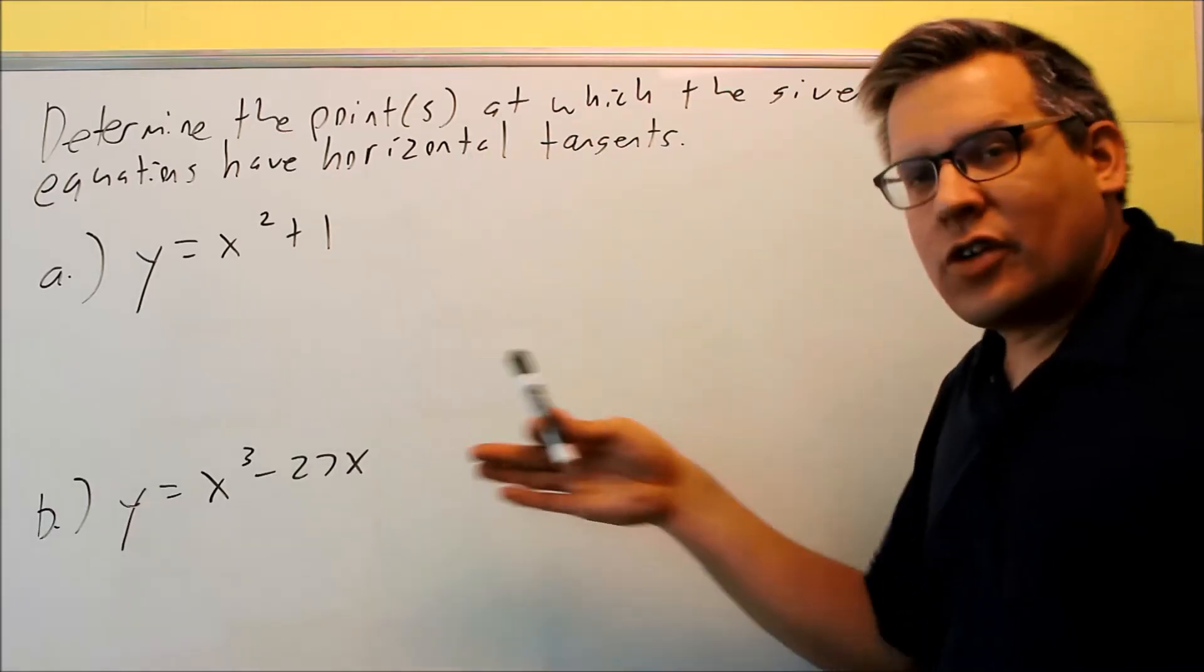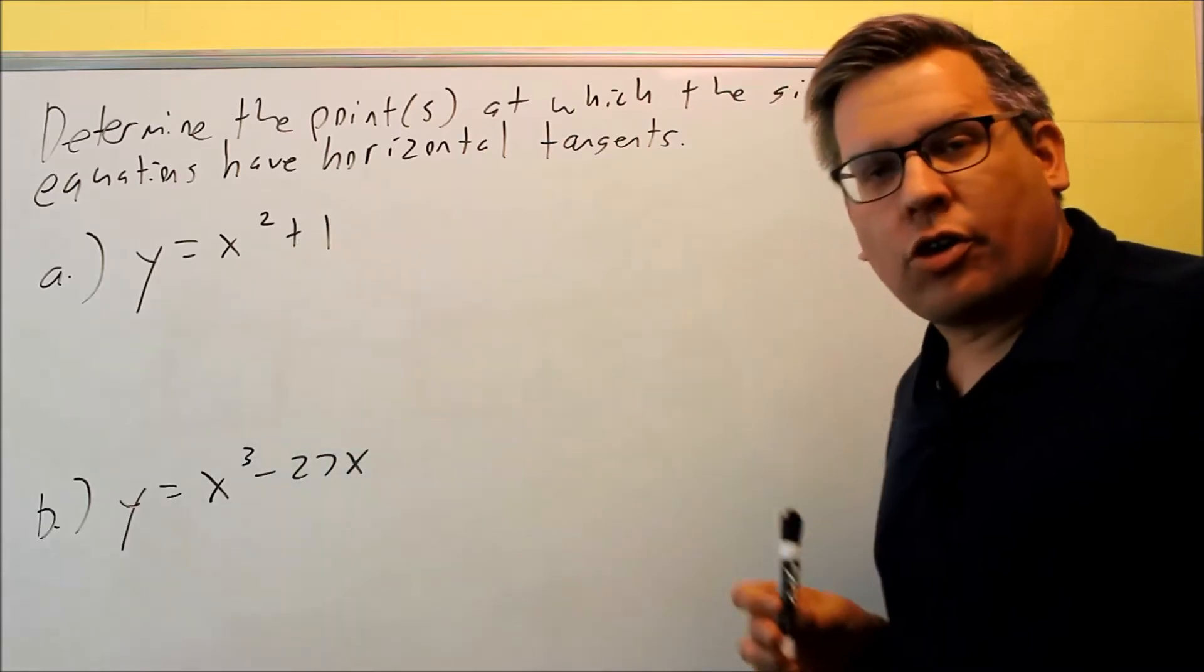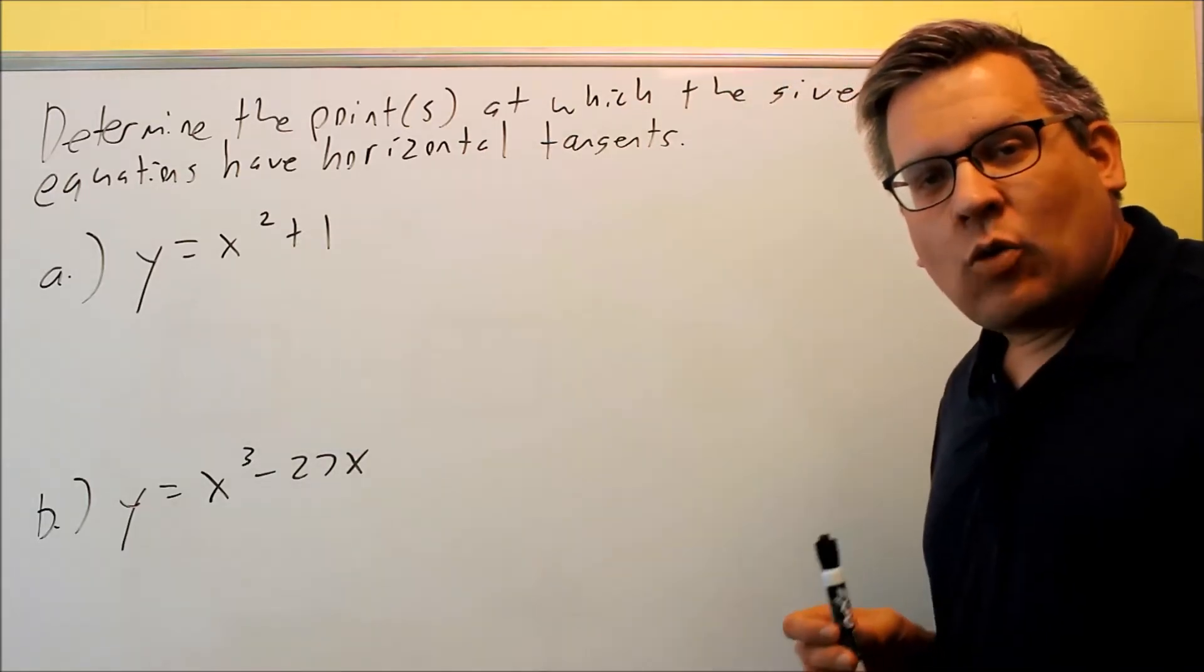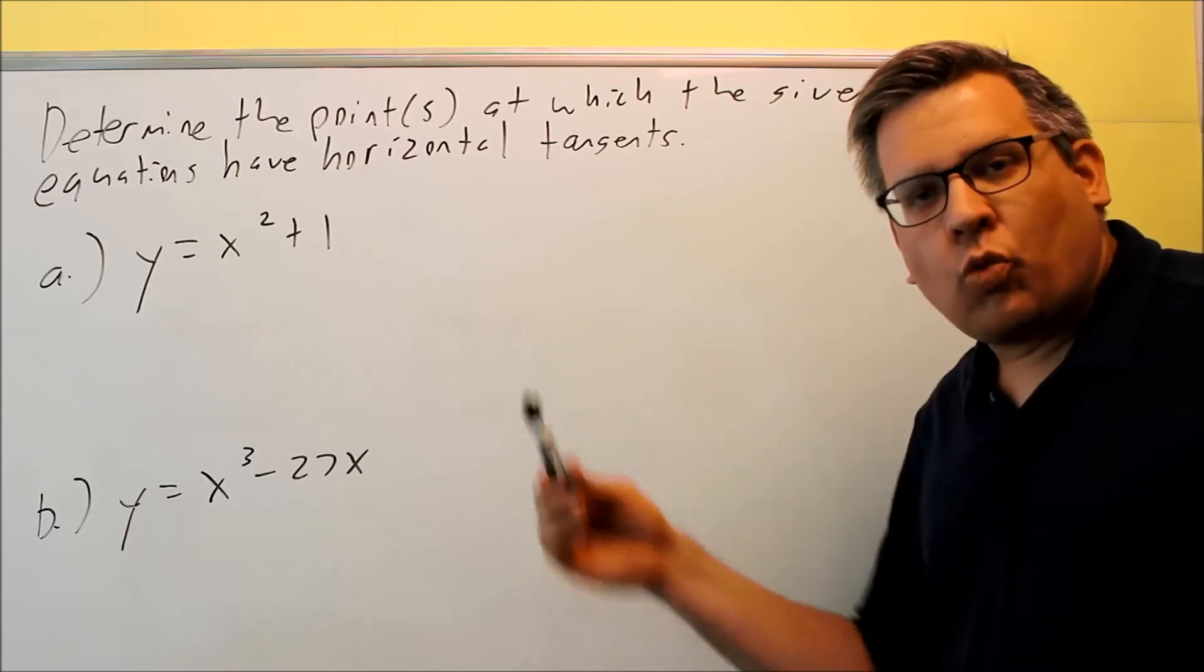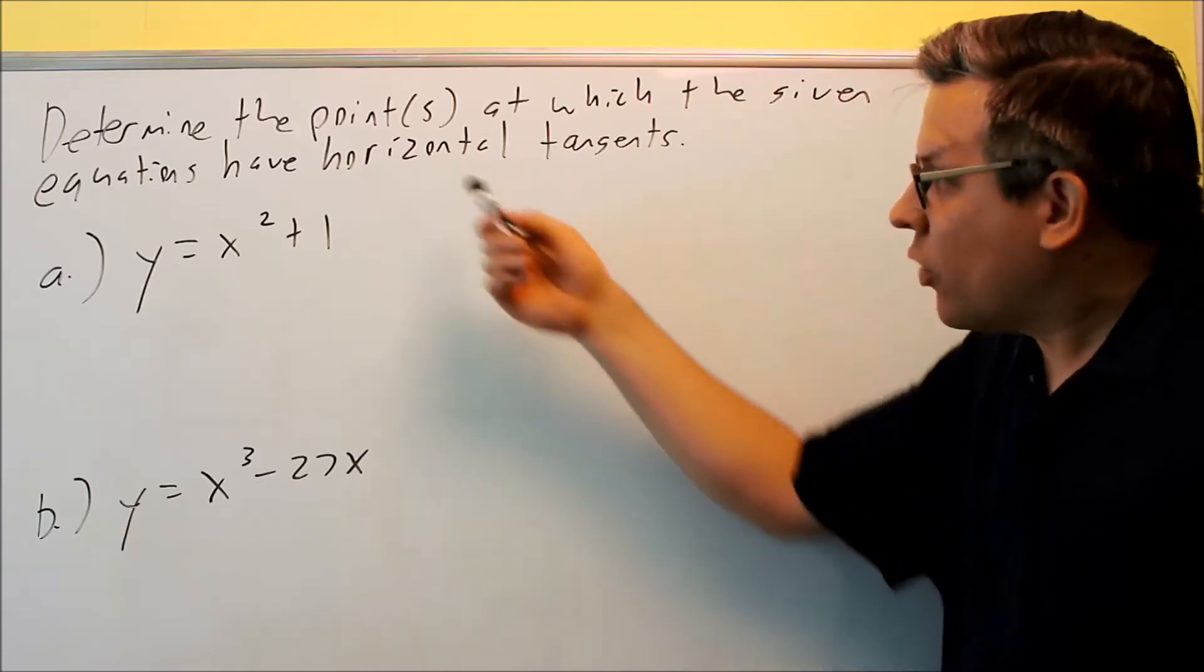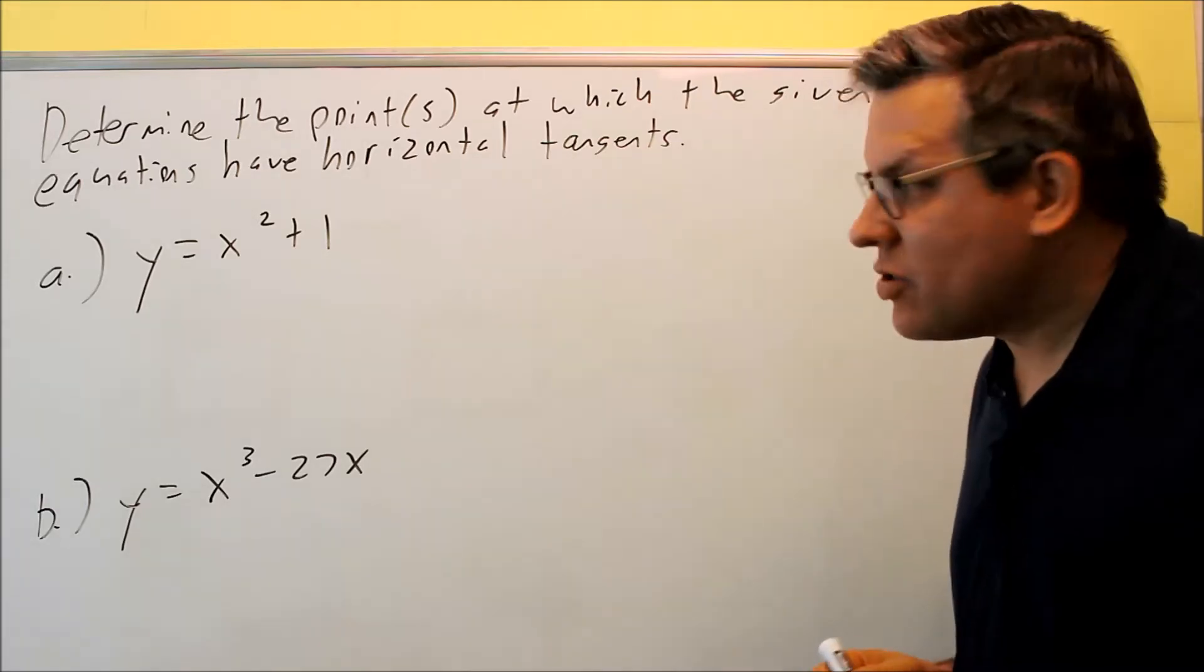So how do you solve these is you're going to take the derivative, we're going to use the power rule for that. Once we have the derivative, we're going to set it equal to zero, and that's going to tell us what x values is the derivative zero. In other words, where it has a horizontal tangent. So that's the idea.